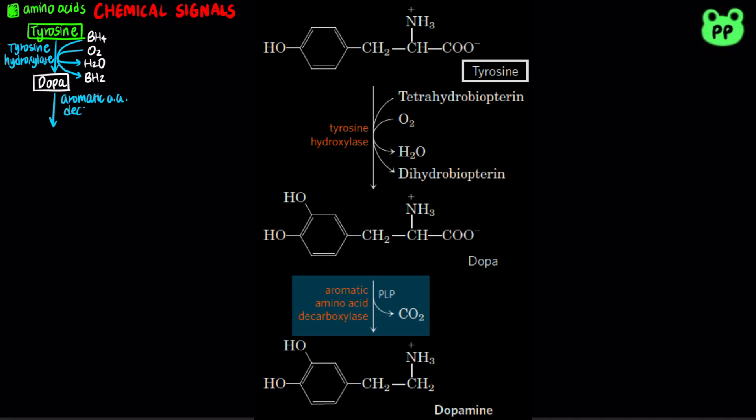Next, aromatic amino acid decarboxylase removes the carboxyl group from dopa, producing carbon dioxide and dopamine. This reaction requires the cofactor pyridoxal phosphate, or PLP.